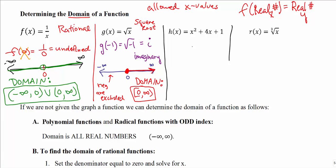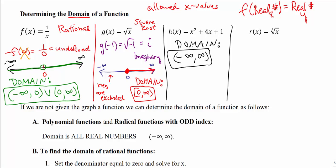The third function h(x) is what we call a quadratic function, and a quadratic function has no issues. There are no variables in denominators, no fractions, and no square roots or radicals at all. So the domain is all real numbers — from negative infinity to positive infinity. There's nothing to exclude; I can use any number from the entire number line and will never get an imaginary number or an undefined value.